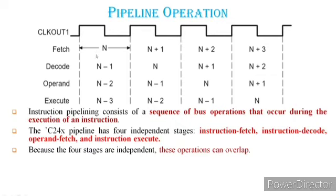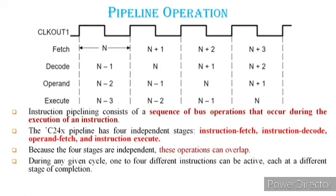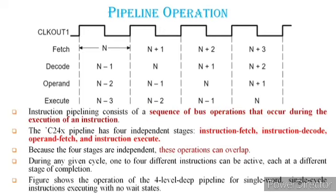Since the four pipeline stages are independent, these operations can be overlapped. During any given cycle, one to four different instructions can be active, each at a different stage of completion — for example, the nth instruction fetching while n-1 is decoding, n-2 is in operand fetch, and n-3 is in execution. This figure shows the operation of the four-level deep pipeline for single-word, single-cycle instructions executing with no wait states.